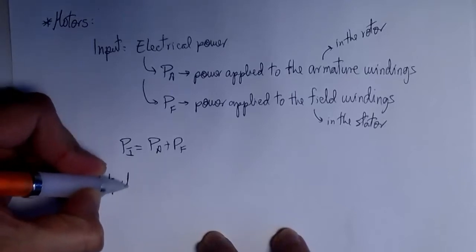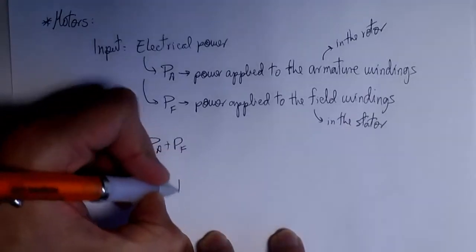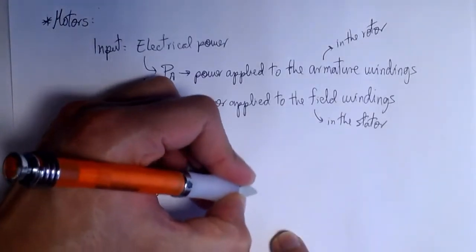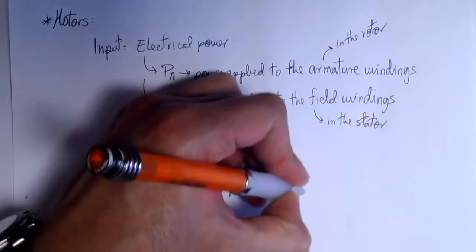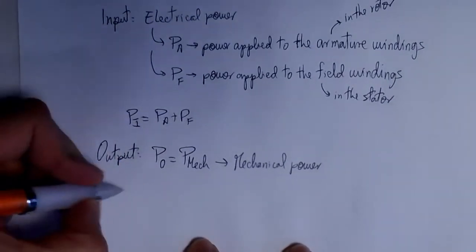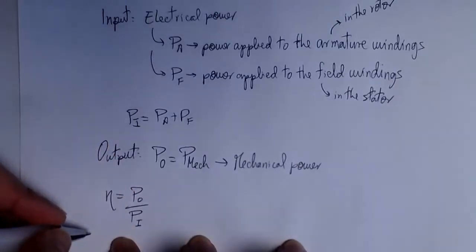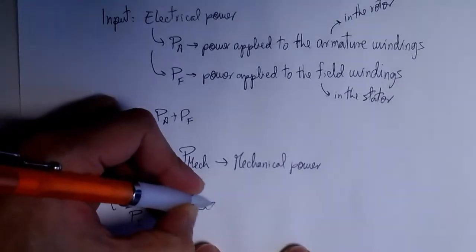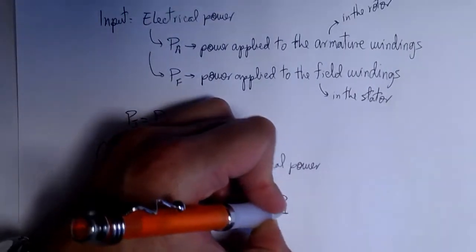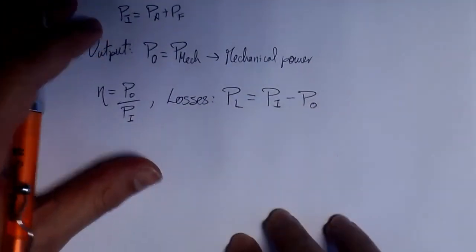The output of a motor is mechanical power. We get mechanical power at the output, and with that power we can move a mechanical load. We can compute an efficiency as the ratio of output divided by input. The input is not equal to the output because we have losses — we can compute the losses by subtracting input minus output.